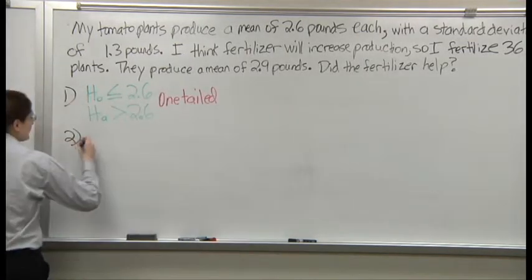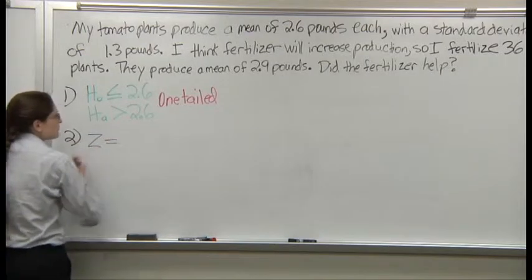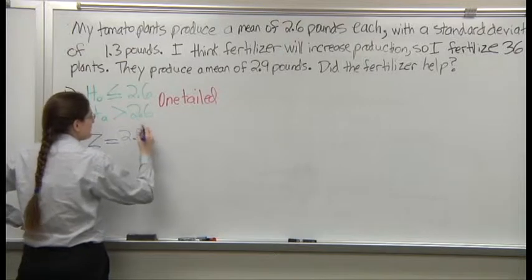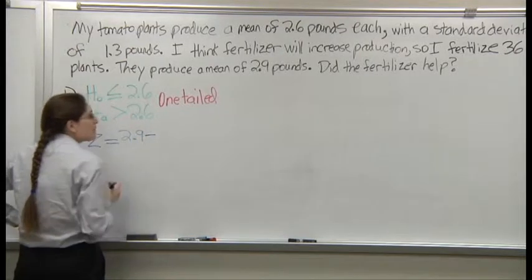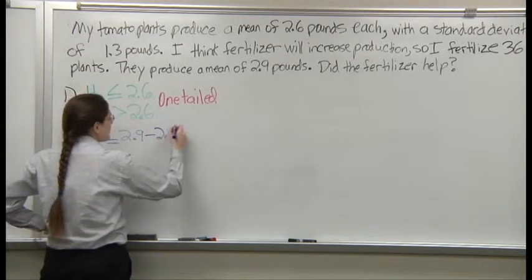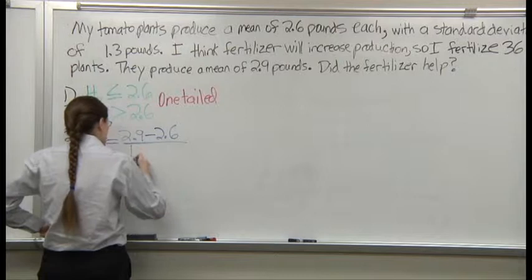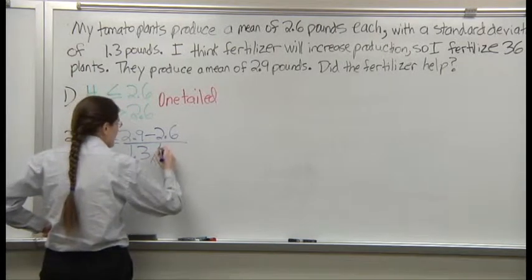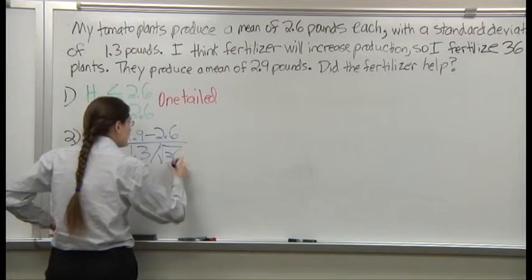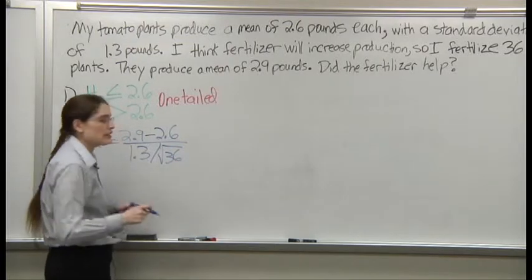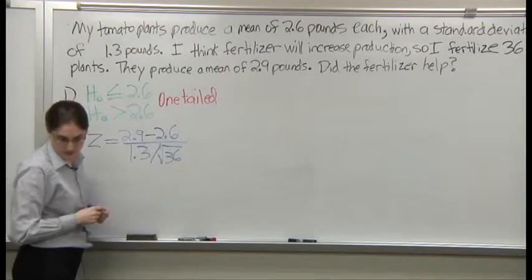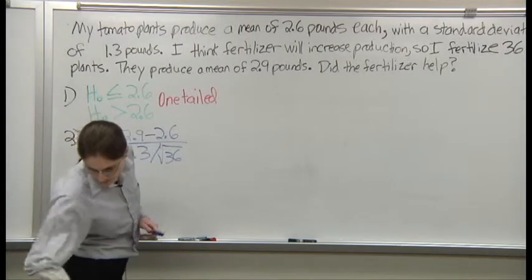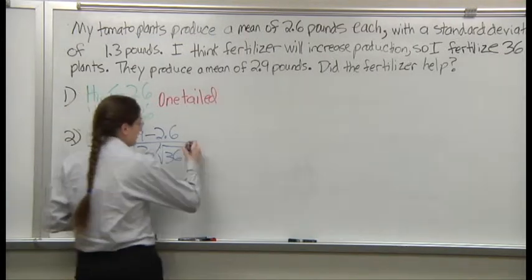Next we apply the Z-formula. My sample mean is 2.9, the population mean is 2.6, the standard deviation is 1.3, and the number of plants is 36. That works out to a Z of 1.38.